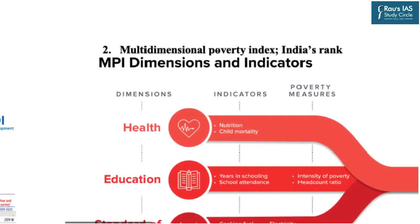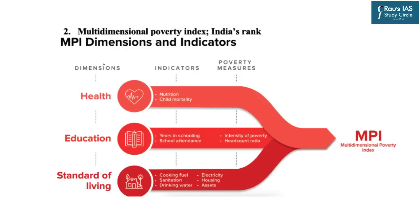Next comes the Multidimensional Poverty Index. This index is very important not just from the prelims perspective but also from the mains perspective. There are two ways to prepare any report. First is the factual information — the ranking of India as well as the indicators or parameters used. Second, these reports also show us a path: which things are important to measure any particular phenomenon.